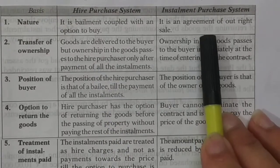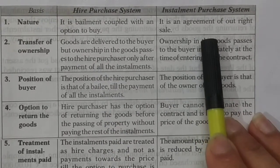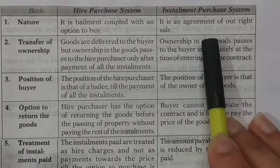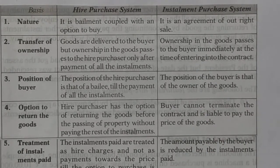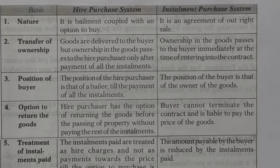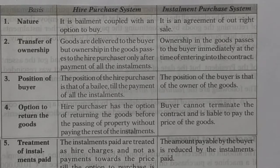The Installment Purchase System, on the other hand, is an outright sale. There is no bailment; there is no option to return the goods. Ownership (malikana adhikar) transfers immediately from seller to buyer the moment the contract is signed.